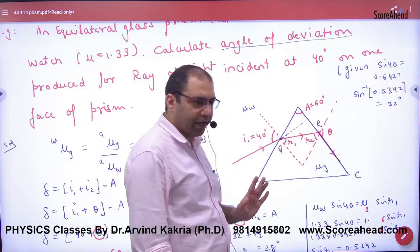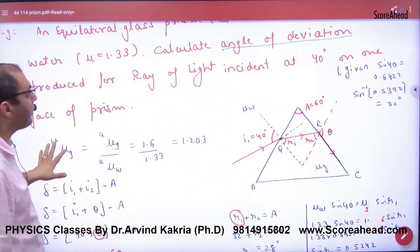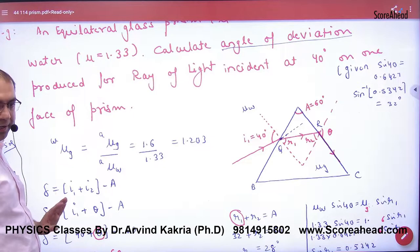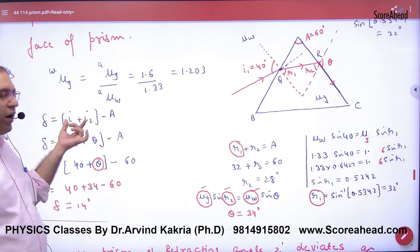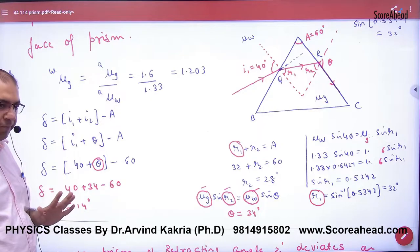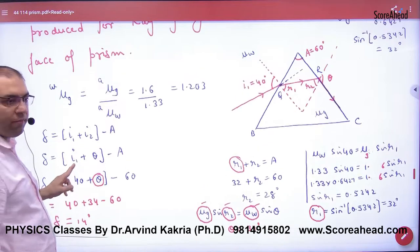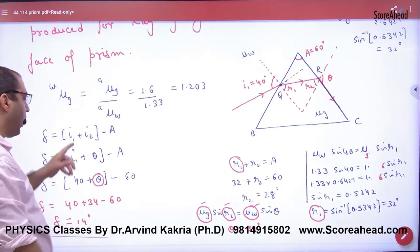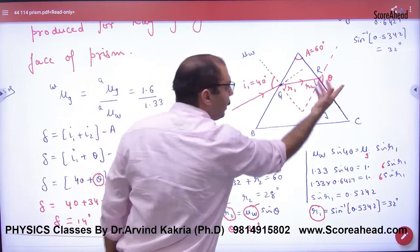A is 60 degrees given. What do we want to take out? Angle of deviation is delta. Look, the delta is i₁ plus i₂ minus A. I don't know the value of i₁ in this question. I don't know the value of i₂. So what do we want to take out?